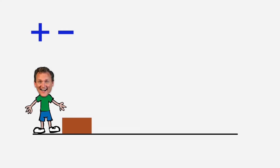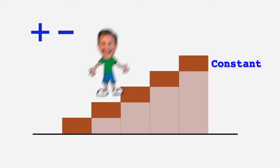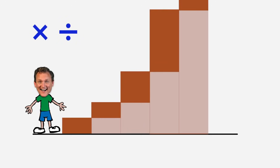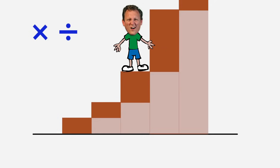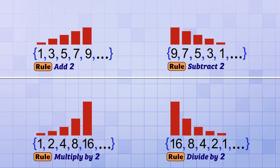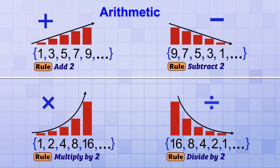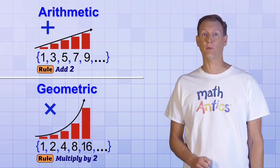When you keep adding or subtracting the same amount, the sequence changes by a constant amount each step — like going up or down a normal flight of stairs. But if you multiply or divide each time, the sequence changes by an increasing or decreasing amount each step. Because of this big difference, mathematicians have different names for them: sequences based on addition or subtraction rules are called arithmetic sequences, while sequences based on multiplication or division rules are called geometric sequences.